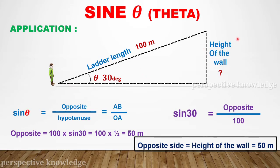Sin theta is equal to opposite side divided by hypotenuse. Here the height of the wall is the opposite side, and the hypotenuse is the length of the ladder — OA — which is 100 meters. We substitute into the formula: sin 30 is equal to opposite side divided by 100.